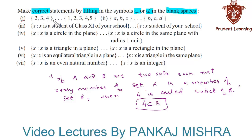In the first section, the first set contains elements 2, 3, and 4, whereas the second set contains elements 1, 2, 3, 4, and 5. We can see that every element of the first set is present in the second set. Therefore, the first set is a subset of the second set.